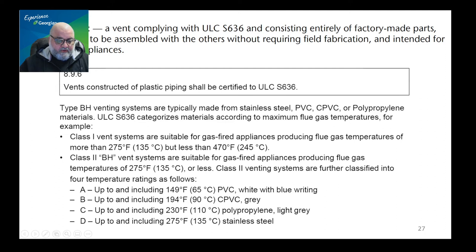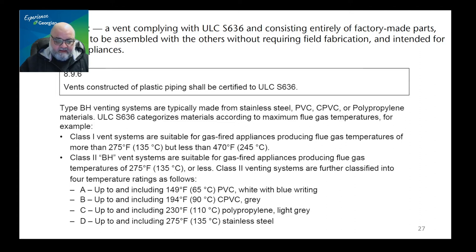In the codebook, you need to pay close attention to the type BH vent. It complies with ULC standard 636, and you must use parts manufactured by the same manufacturer — don't mix and match parts from different manufacturers. Also, clause 8.9.6 states that vent constructed of plastic piping shall be certified to system 636. And yes, that means all plastic piping.